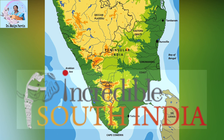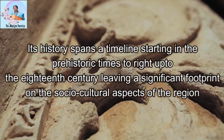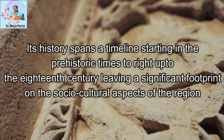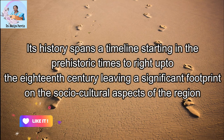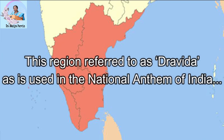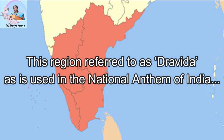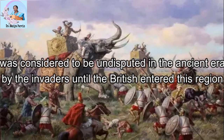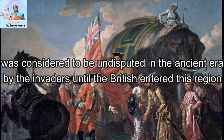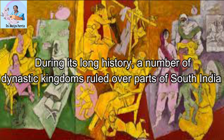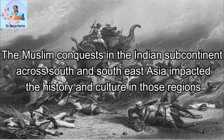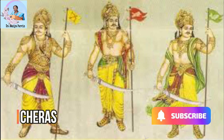The region south of the Vindhyas up to the Cape of Kanyakumari has been called South India, and its history spans a timeline starting in prehistoric times to right up to the 18th century, leaving a significant footprint on the socio-cultural aspects of the region. This region, referred to as 'Dravida' as used in the national anthem of India, was considered undisputed in the ancient era by invaders until the British entered. During its long history, a number of dynastic kingdoms ruled over parts of South India, and the Muslim conquest in the Indian subcontinent across South and Southeast Asia impacted the history and culture of those regions.